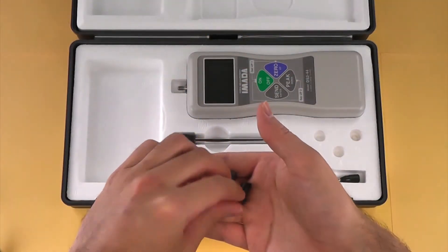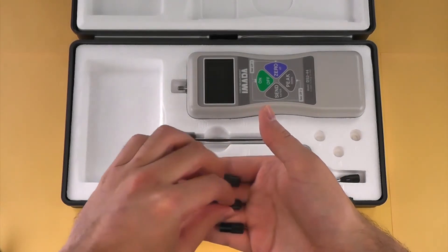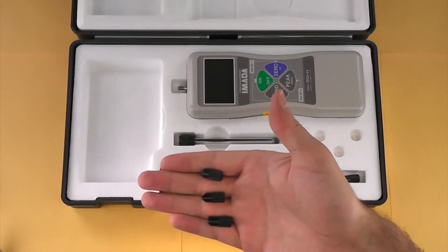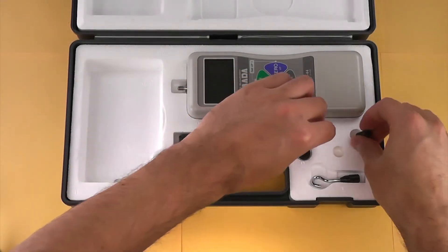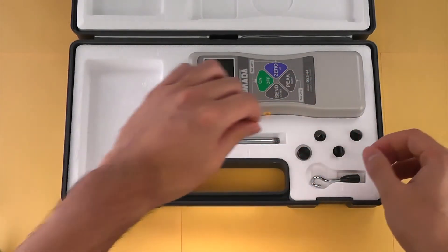The DS2 force gauge kit also includes a chisel tip, conical tip, and notch tip attachments. We also have many attachments for more specialized applications. Please visit our website for more information.